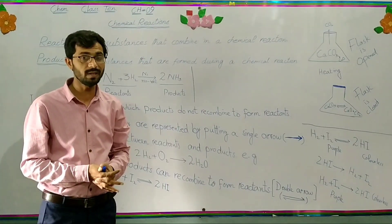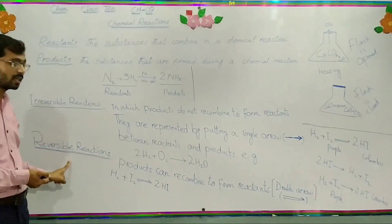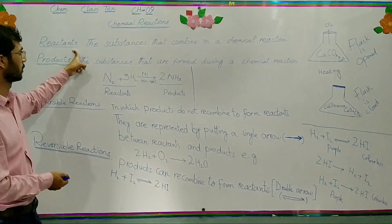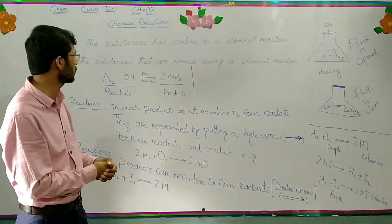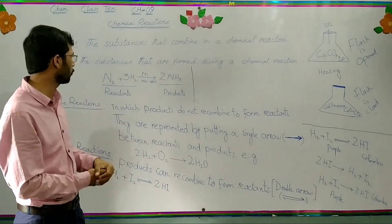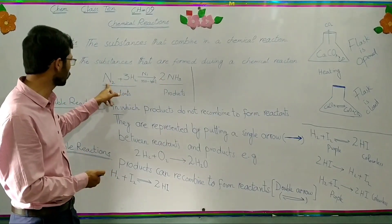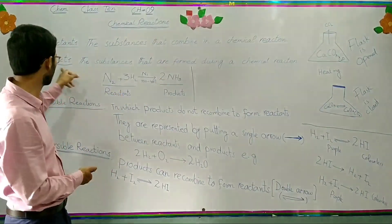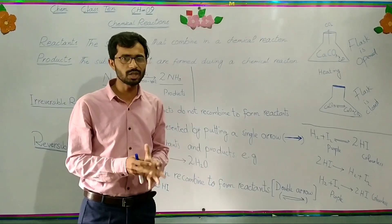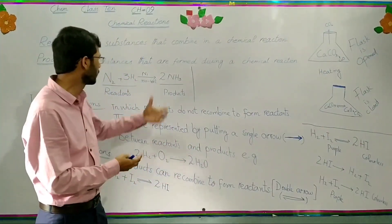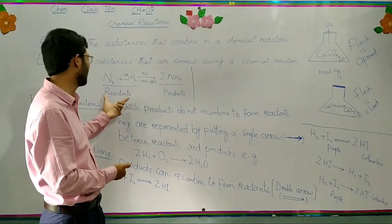In chemical reactions we study about reactants, products, irreversible reactions, and reversible reactions. Reactants are those substances that combine in a chemical reaction. Products are those substances that are formed during a chemical reaction. Products are written after the sign of arrow, and reactants are written before the sign of arrow.